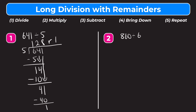Let's try number 2. We have 860 divided by 6. Let's rewrite that as a long division problem: 860 under the bar and 6 outside. Step 1 is divide — how many whole groups of 6 can go into 8? That would be 1. Step 2 is multiply: 1 times 6 is 6. Step 3 is subtract: 8 minus 6 gives us 2. Step 4 is bring down — we bring down our 6, so now that's 26.